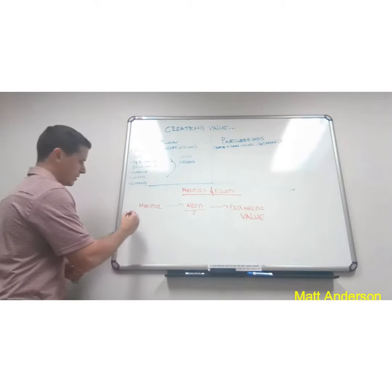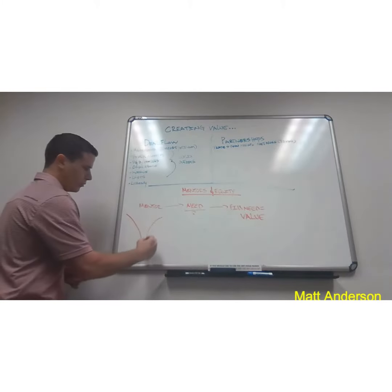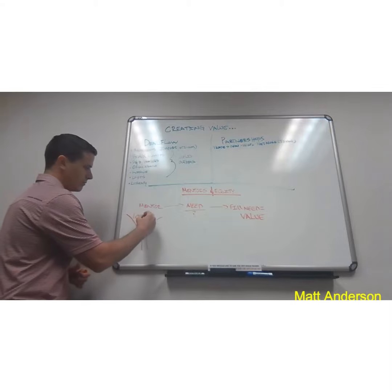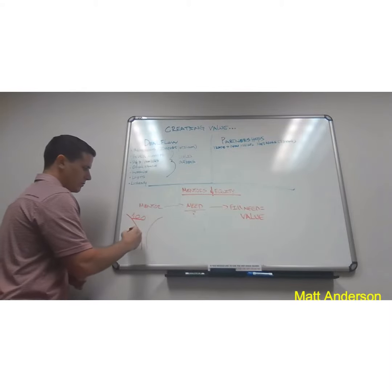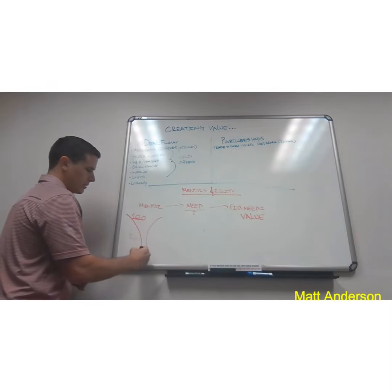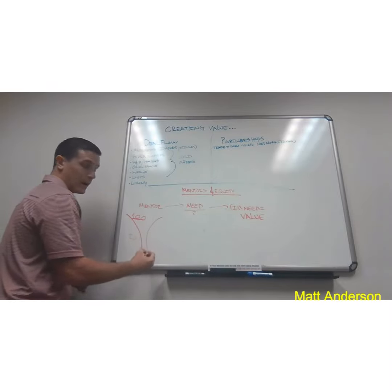Usually with this funnel that you're going to go through, we usually say roughly you're going through 100 deals, you might do due diligence on 20, maybe close one to three.